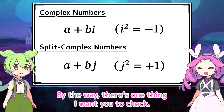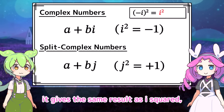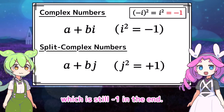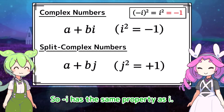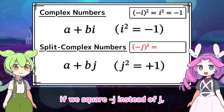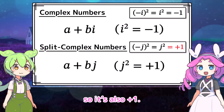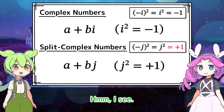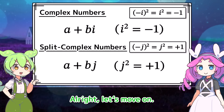There's one thing I want you to check. If we square negative i instead of i, it gives the same result as i squared, which is still negative 1. So negative i has the same property as i. Similarly, if we square negative j instead of j, it gives the same result as j squared, so it's also positive 1. So negative j has the same property as j too.